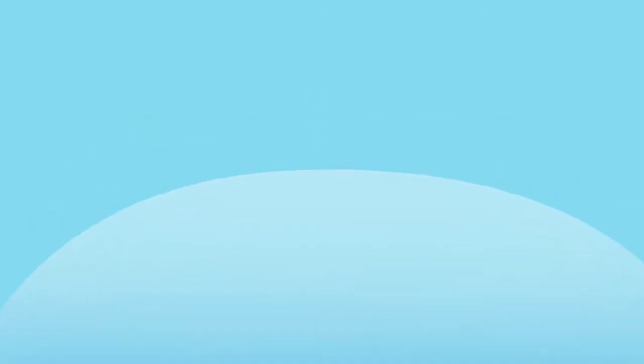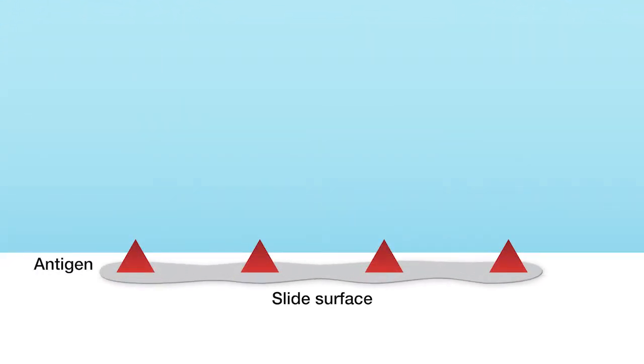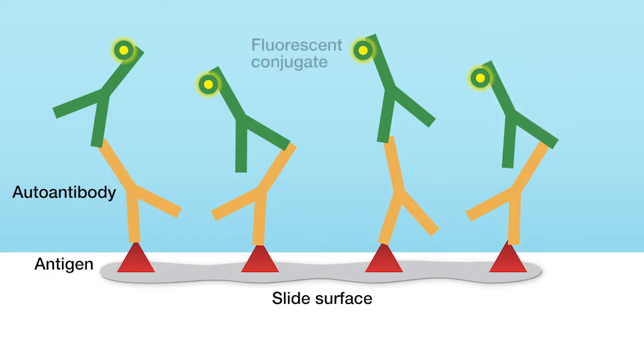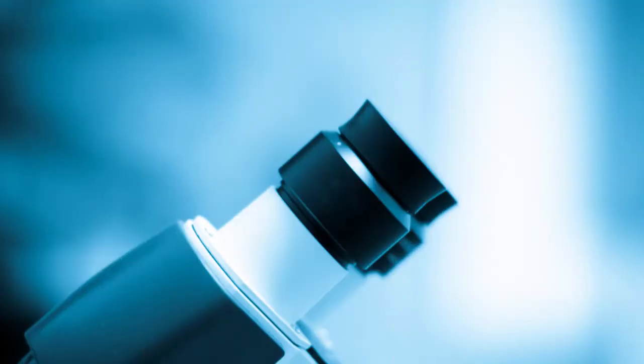The IFA patterns you see depend on the antigens in the HEP2 cells reacting with the antibodies in the patient serum. When an ANA IFA is positive, the IFA pattern can be seen with the aid of a fluorescent microscope.